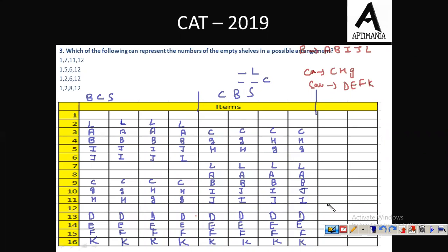Question 3: which of the following can represent the numbers of empty shells in a possible arrangement? Checking option by option: shells 1, 7, 11, 12 — 7 is not empty in some cases; 1, 5, 6, 12 — 5 is not empty in cases; 1, 2, 8, 12 — 8 is not empty; but 1, 2, 6, 12 — checking the later four cases, shells 1, 2, 6, 12 are all empty. So the only possible answer is option C: 1, 2, 6, and 12.